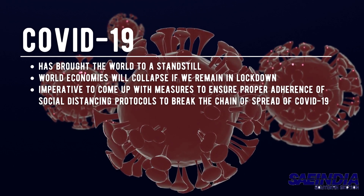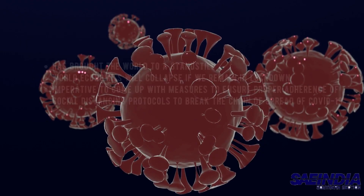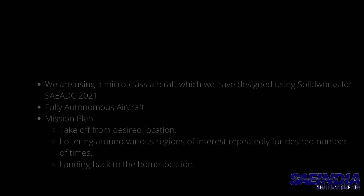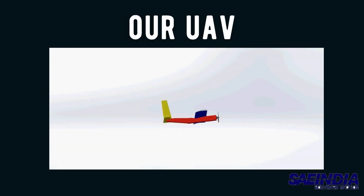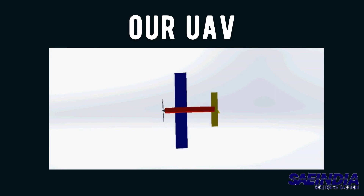To break the chain of spread of COVID-19, our solution is to use a fully autonomous aircraft which can carry out a mission plan, take off from a designated location, loiter around the various regions of interest, and land back to the home location.